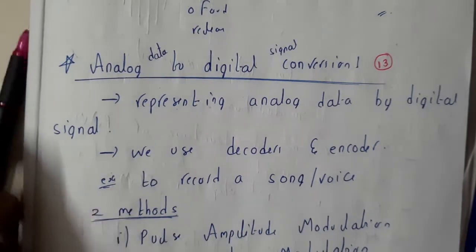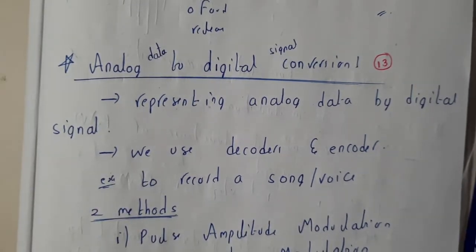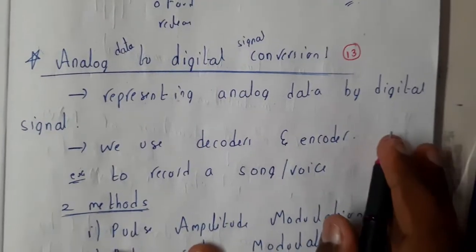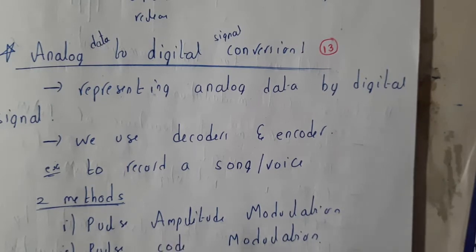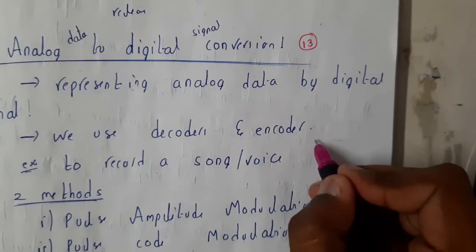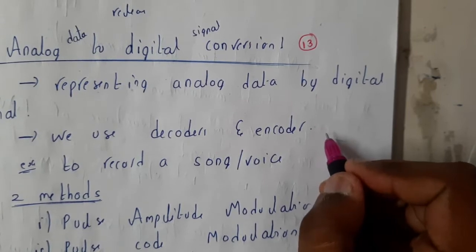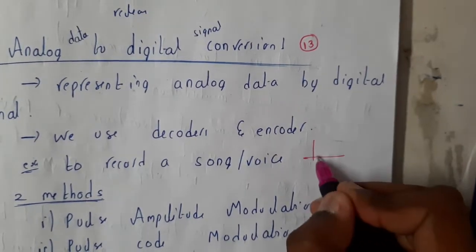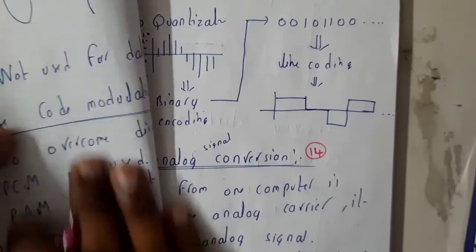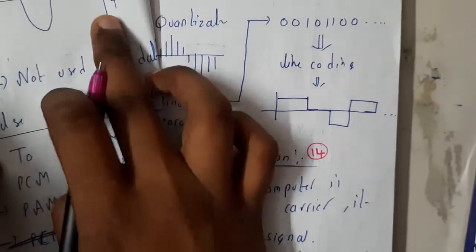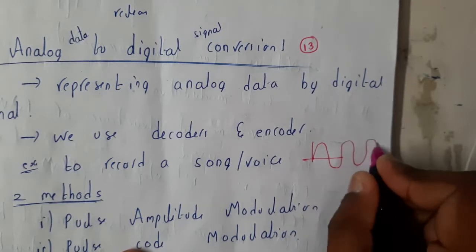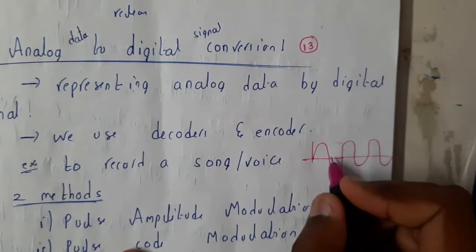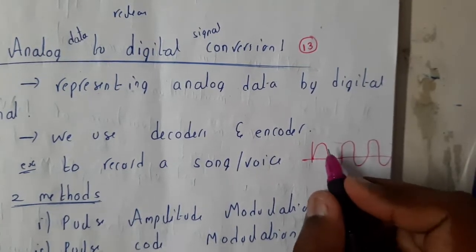Hello guys, we are back with our next tutorial. In this tutorial, let us go through the conversion of analog data to digital signal. You may ask what analog data and digital signal are. Analog data is in this format — this could be an analog signal or analog data — and we will be converting this into a digital signal.